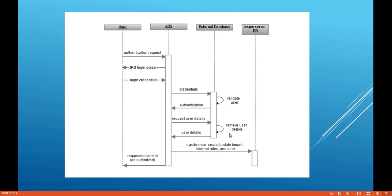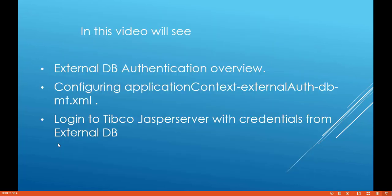First we'll check the overview of external DB authentication — how the sequence works. We have entities: user, JasperServer, external database, and JasperServer database. When a user requests a JasperServer page, it asks for login credentials. JasperServer then validates the credentials from the external database via a query. Once authenticated, it retrieves user details and syncs the user details, roles, and tenant details with the JasperServer database, then authorizes the user to the home page or the requested page.